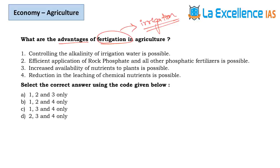Since option 4 is common across three answer choices, decide if it's right or wrong to eliminate one option. Statement 4 says reduction in leaching of chemical fertilizers is possible — yes, when injecting fertilizers into the irrigation system there will be reduction in leaching of chemical nutrients. So statement 4 is correct; eliminate that option.